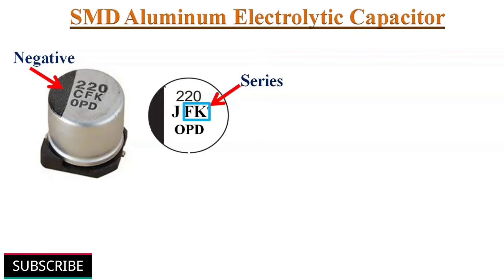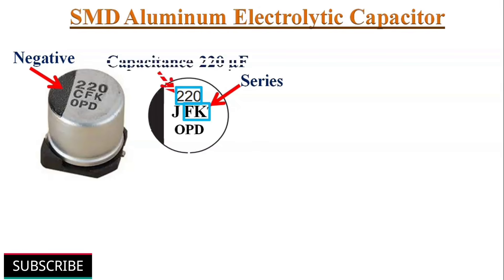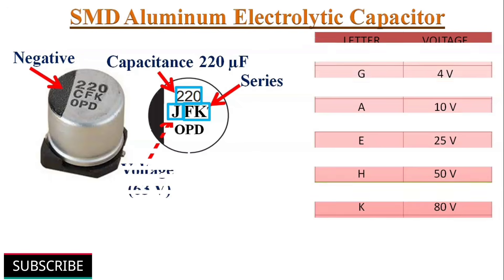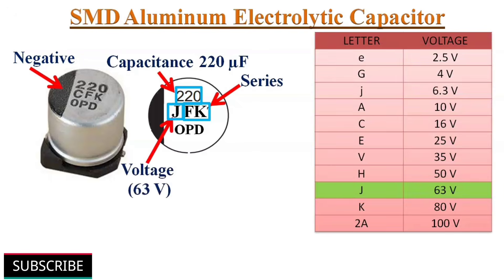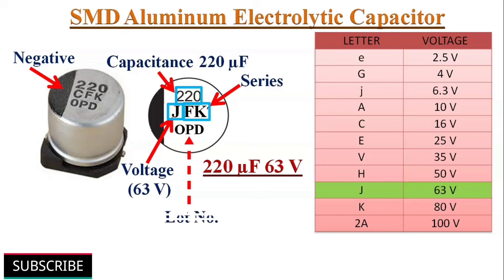Another type is the AFK series, where the capacitance value is indicated with three digits — here it is a 220uF capacitor. The alphabetic letter J indicates a voltage rating of 63V, so the capacitance value is 220uF 63V. The three alphabet letters at the bottom indicate the lot number.